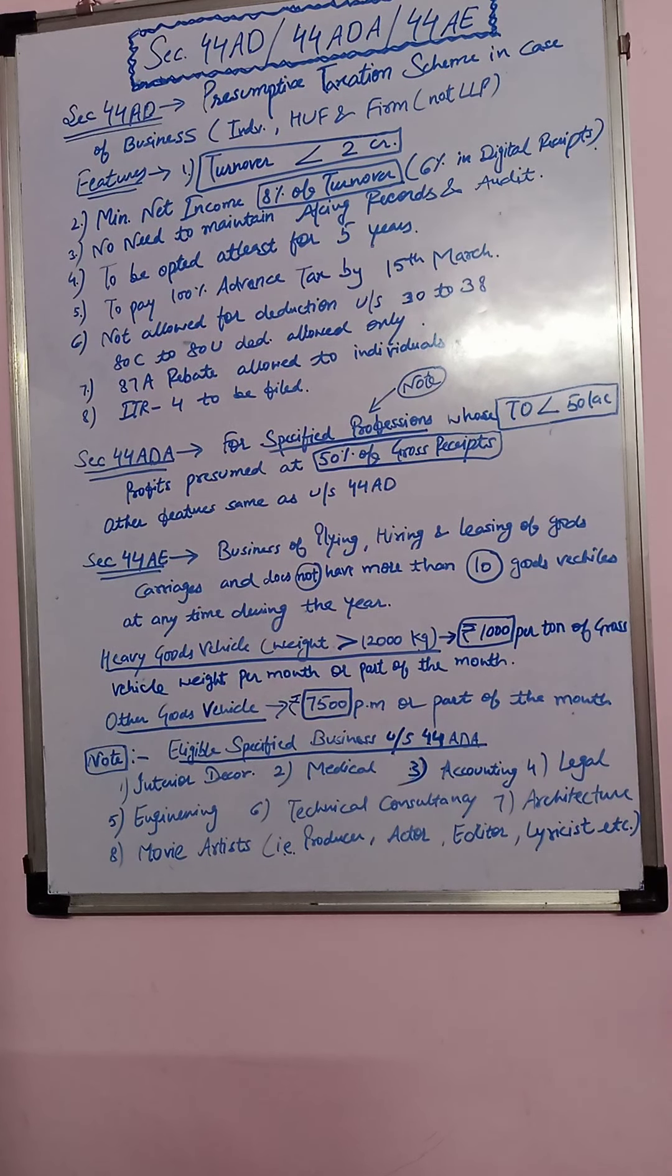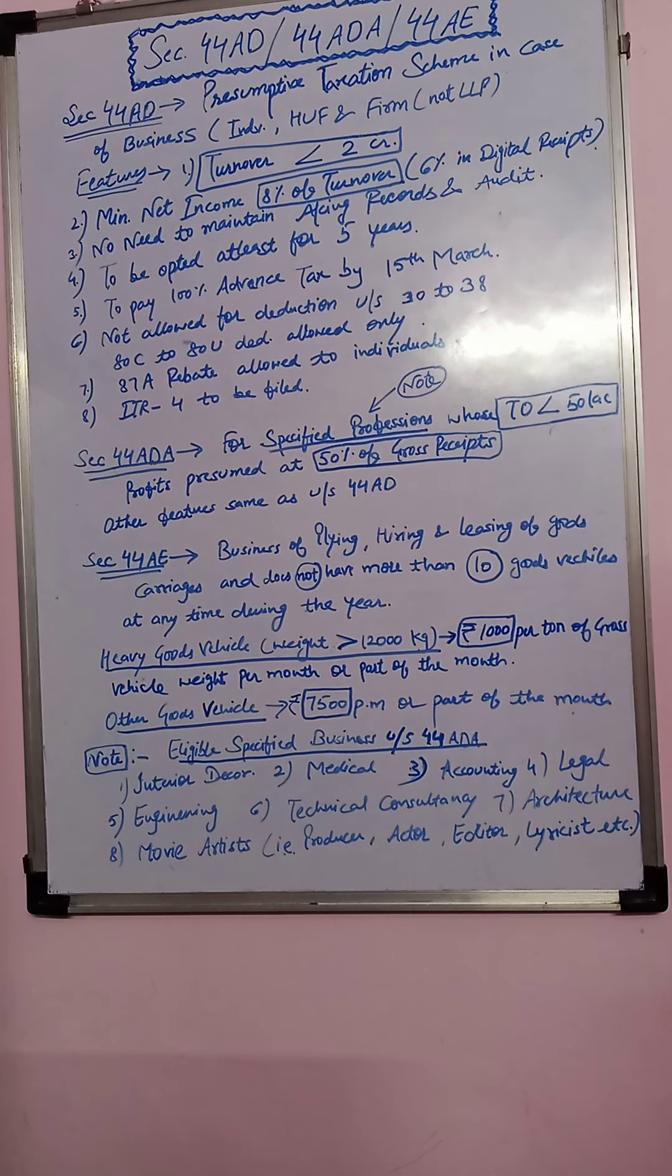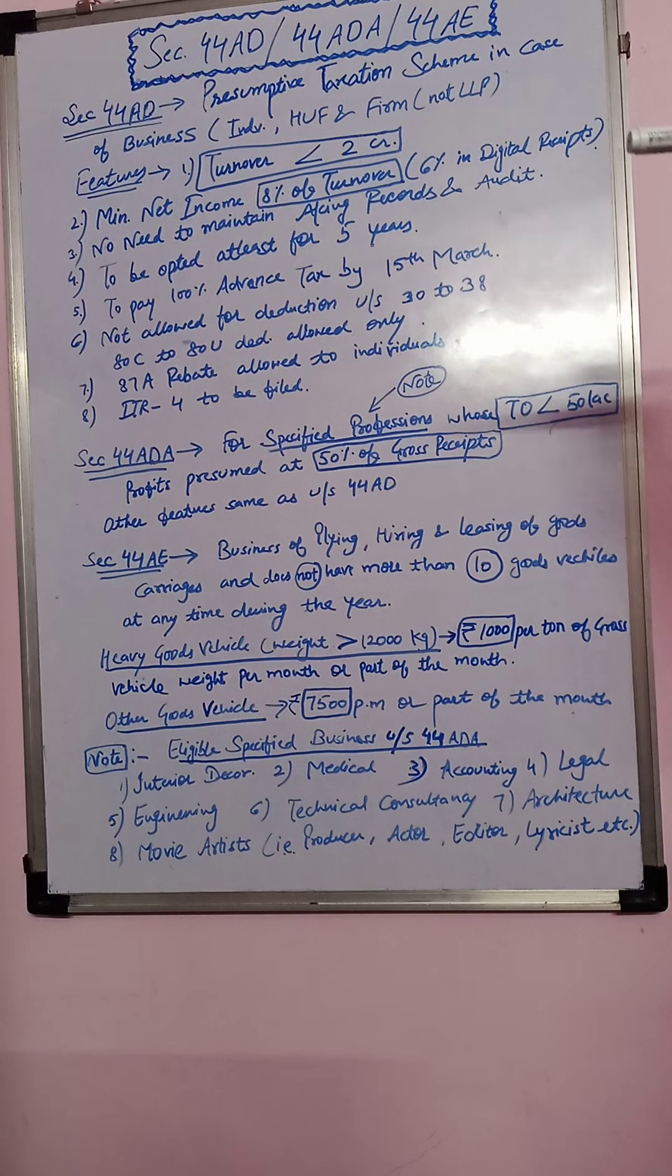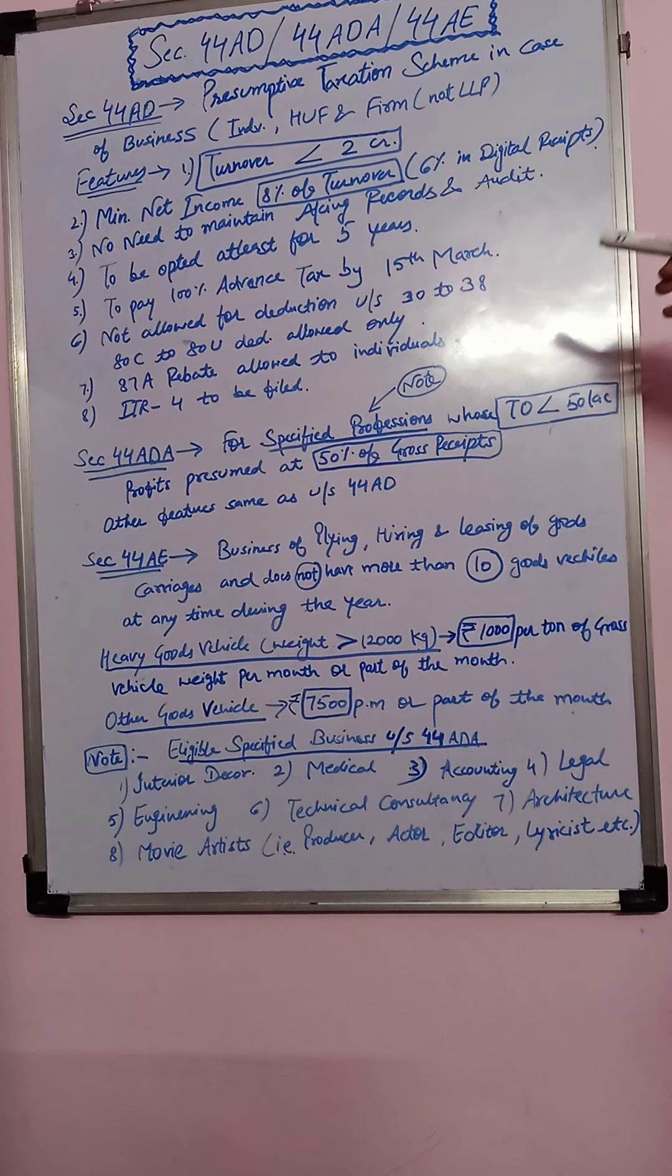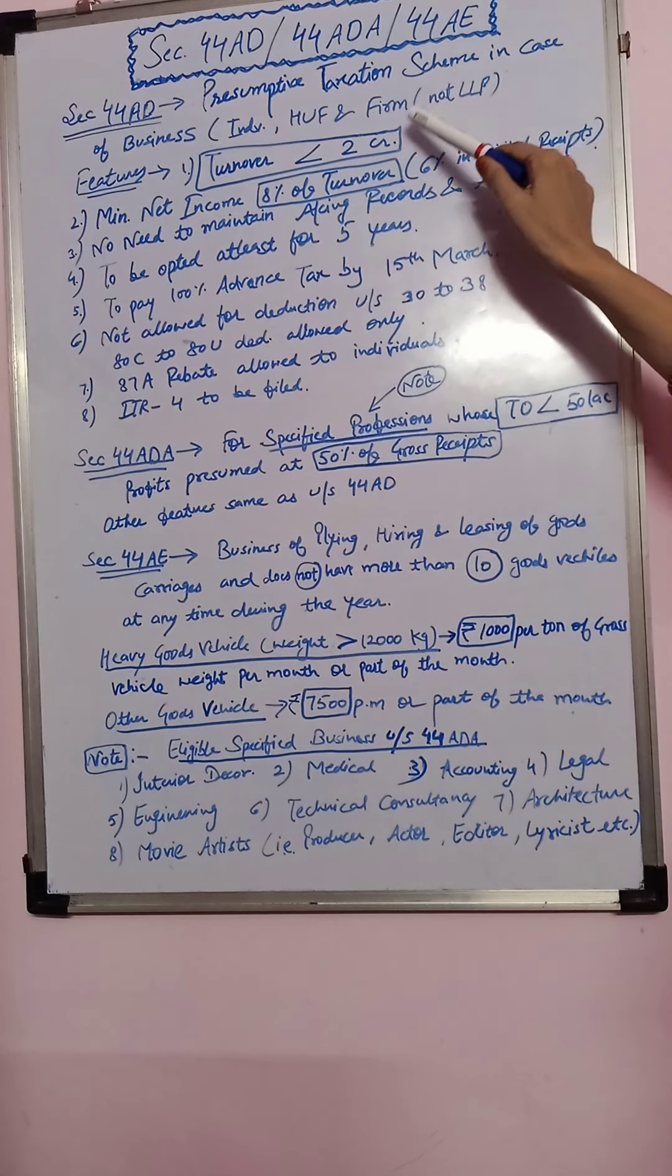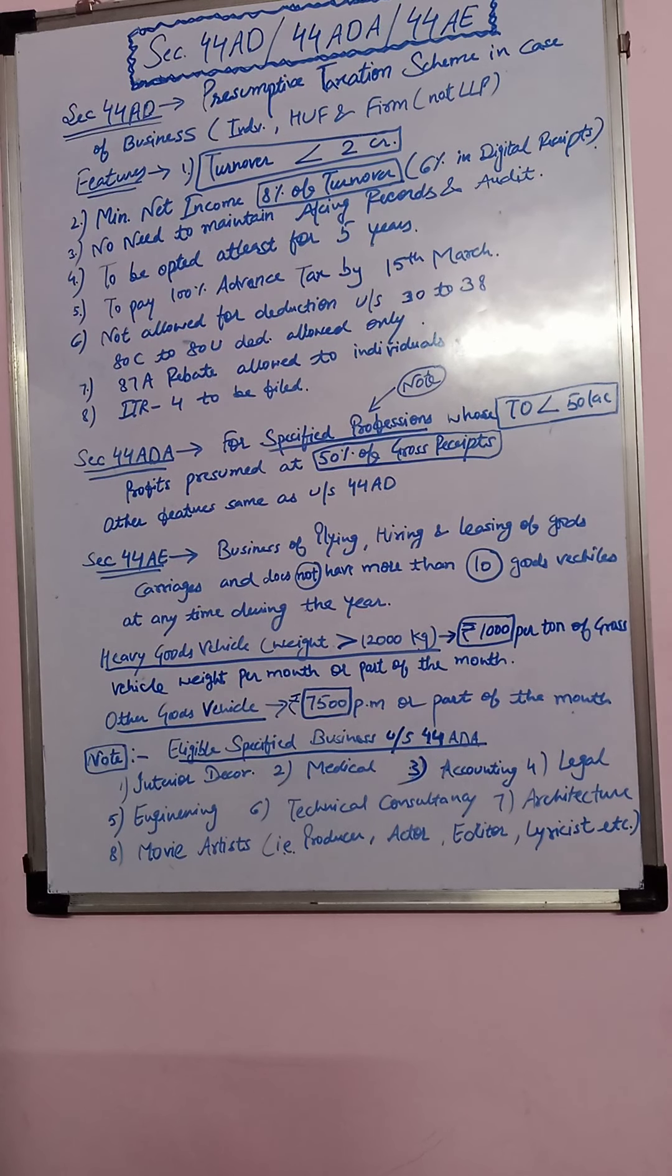Let's start with Section 44AD. Basically, these sections are all about the deemed income, deemed profit and gain. That's why this name is presumptive taxation scheme. What do we do in this section? 44AD is also deemed profit. We compute tax on the deemed profit.